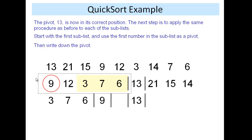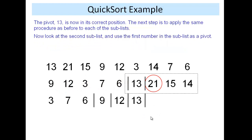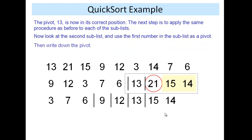And then write down the numbers bigger. Well, it's only one, isn't it? It's just 12. We then do the same with this list here. We write the numbers smaller than it to the left, 15, 14, and then 21, and there are no other numbers.